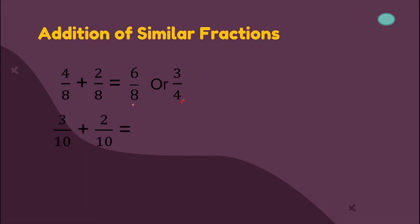Let us try another example. We have three over ten plus two over ten. Since we have the same denominator, ten, just copy the denominator and add three plus two, that is five. Can we still simplify five over ten? The answer is yes. We can divide five and ten by five. Five divided by five is one, and ten divided by five is two. So our answer is one-half.